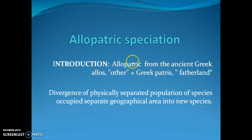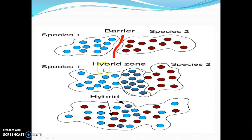Allopatric — the word 'allo' is derived from the Greek 'patis' meaning fatherland, so it means different geographical area. It refers to the divergence of physically separated populations of a species, occupying separate geographical areas, into two species. As you can see in this figure, this is the geographical area in red, this is species 1 and this is species 2. A hybrid zone will appear where species are mixing, and some hybrids will appear between species 1 and species 2.